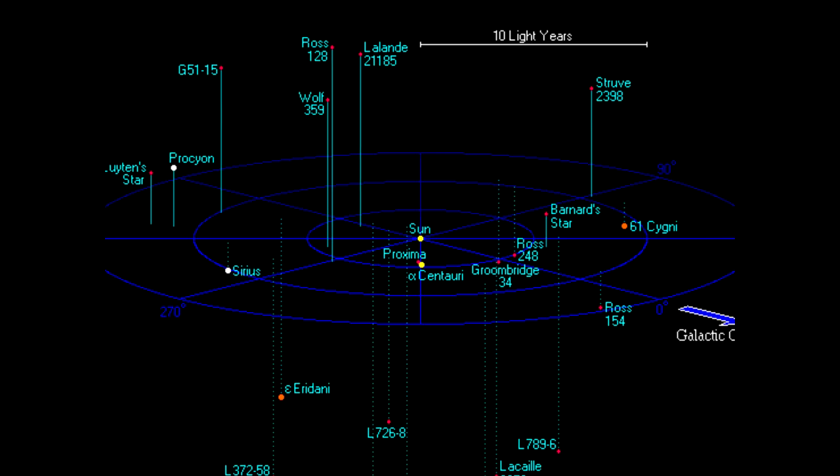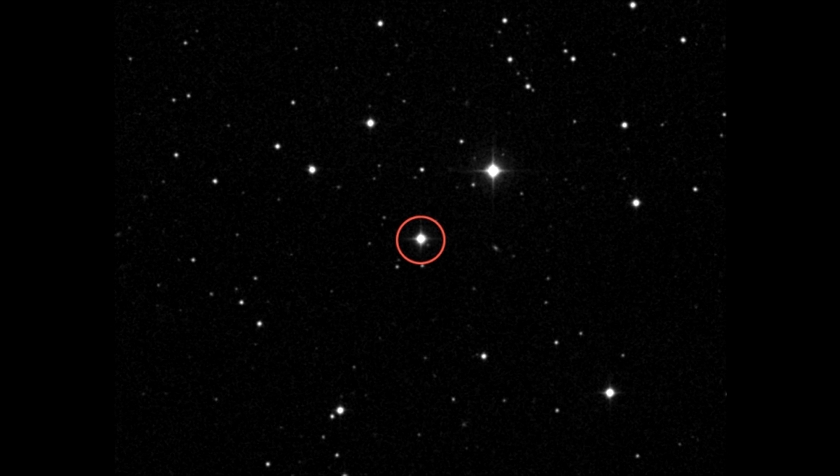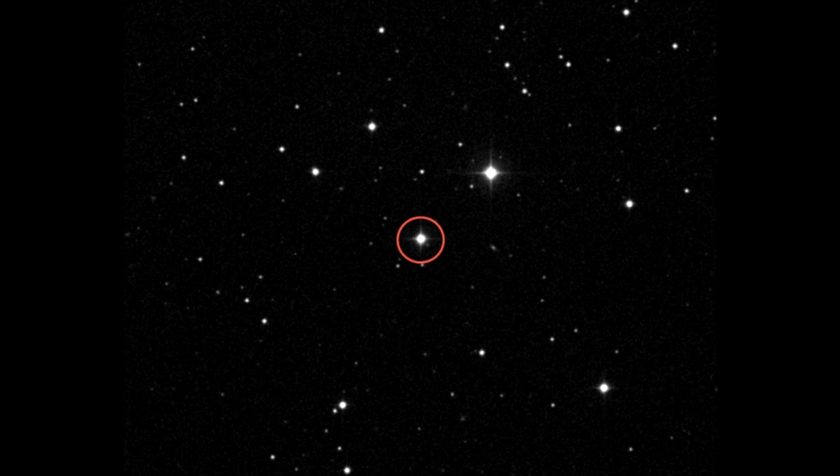By 1838 the fact interstellar distances were several trillion kilometers wasn't really a surprise anymore. From this year on stellar distances were faster and easier calculated every year.